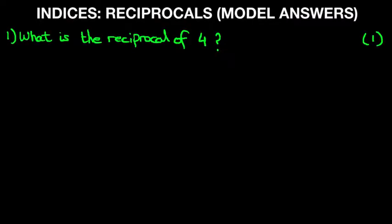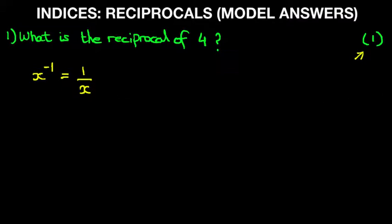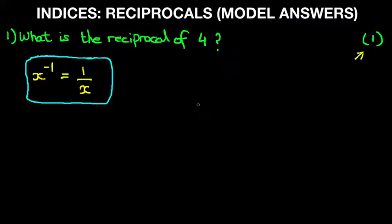What is the reciprocal of 4? The first thing to notice is this is a one-mark question, quite an easy one. The formula that we used in our tutorial was x to the power of minus 1 — that means a reciprocal — equals 1 over x. Let's put a ring around this to highlight that this is our formula. So x to the power of minus 1 equals 1 over x.